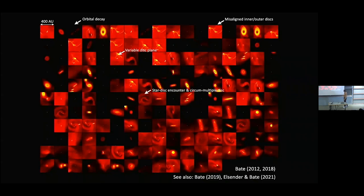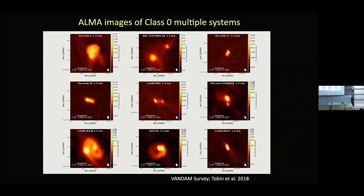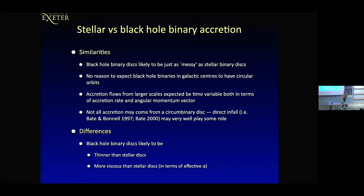That disk analysis was published in 2018. I also did new cluster simulations published in 2019 with different metallicities, and the disks from those were analyzed in a paper just published a few months ago by my PhD student Dan Alcindor. If you're interested in how disks depend on metallicity, you might want to look at that paper. Observers are now seeing these sorts of things, and I assume John Tobin will talk about this more this afternoon.